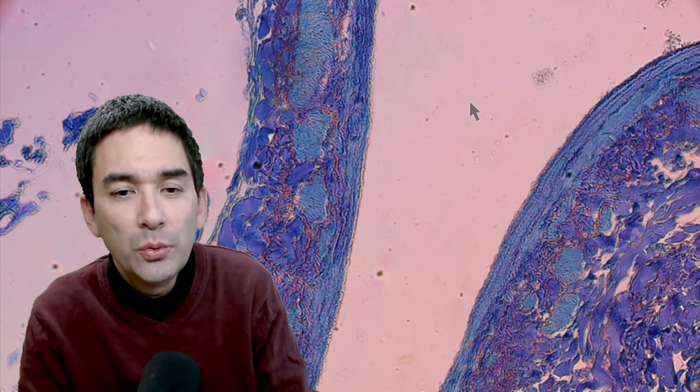But you might wonder why in the world is the inside of the blood vessel so flat. It's here in the artery, and then over here in the vein as well. It's kind of compressed together quite a bit. And I actually want to show you something.